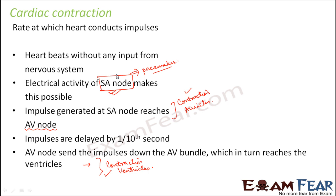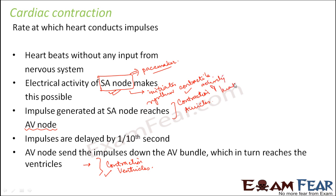That is why our heart beats almost 70 to 75 times per minute, depending upon the age and health of the individual. That is why SA node initiates the rhythmic contractile activity of the heart, and SA node plays a very crucial role in cardiac contraction.